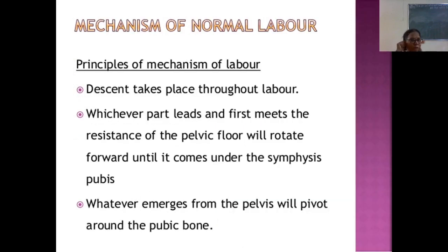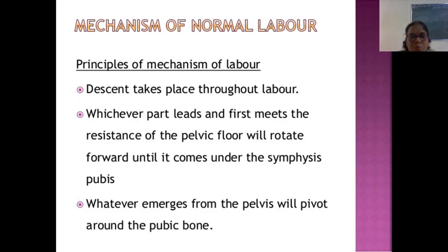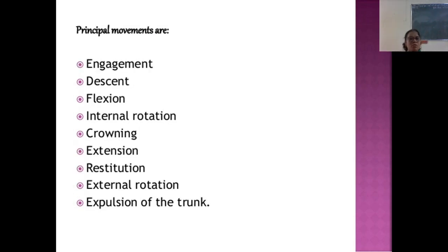The mechanism of normal labor follows key principles. Descent must take place throughout labor. Whichever part leads first and meets the resistance of the pelvic floor will rotate forward until it comes under the symphysis pubis. Whatever emerges from the pelvis will pivot around the pubic bone. These are the principal and important movements in normal labor mechanism.